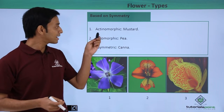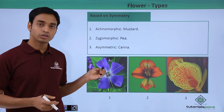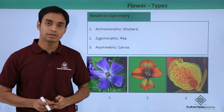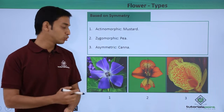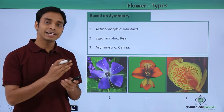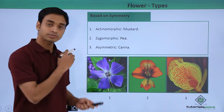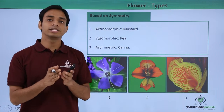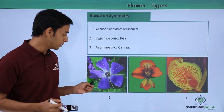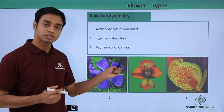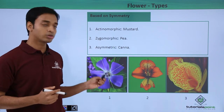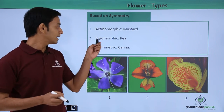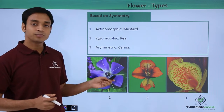The first type is known as actinomorphic flowers. As we can see through this diagram, actinomorphic flowers are those which have radial symmetry. If we try to divide the flower into two equal halves, the radial axis must pass through the center. In any radial axis, the flower will be divided into two equal halves. An example is mustard.